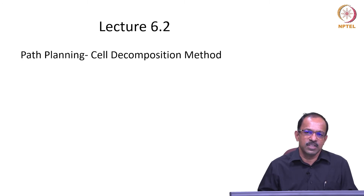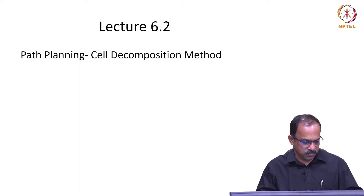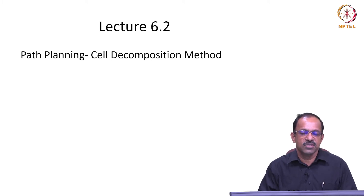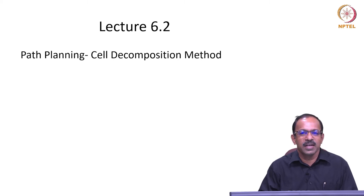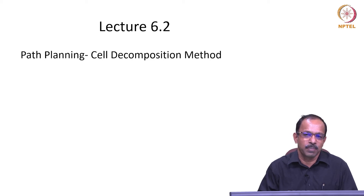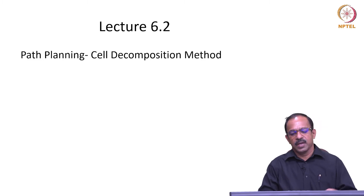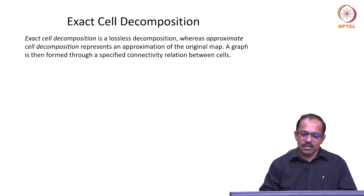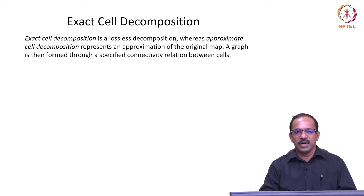We will now see the third method, which is known as cell decomposition. In cell decomposition, what we do is decompose the whole workspace or environment into multiple cells, then look at these cells to see which one is occupied and which one is not occupied. We then try to find a path through all the unoccupied cells to reach the target. There are two methods: one is known as exact cell decomposition and the other one is approximate cell decomposition.